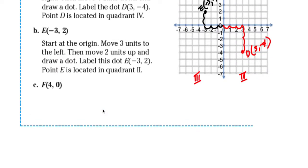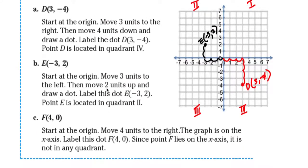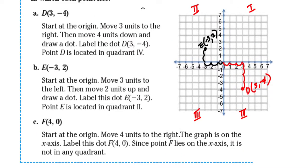And finally, letter C: point F at four, zero. Start at the origin and move four units to the right. The graph is on the x-axis — label the dot four, zero because the y-coordinate is zero. F lies on the x-axis, so therefore it does not belong to any quadrant. Label it four, zero.